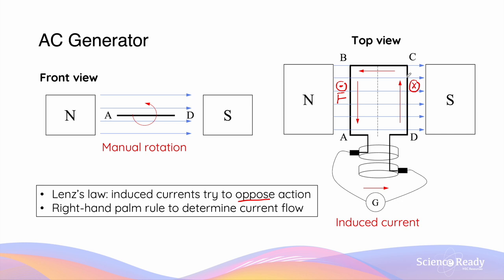Using the right hand palm rule again, our fingers are pointing to the right in the direction of the magnetic field, the palm is facing into the screen as labelled here, and as such, our thumb will be facing upwards, indicating the direction of the induced current. This results in a net directional current that flows from D to C, C to B, and B to A. When this current flows through the external circuits via the slip ring commutators, it will flow through the galvanometer to the right as shown.